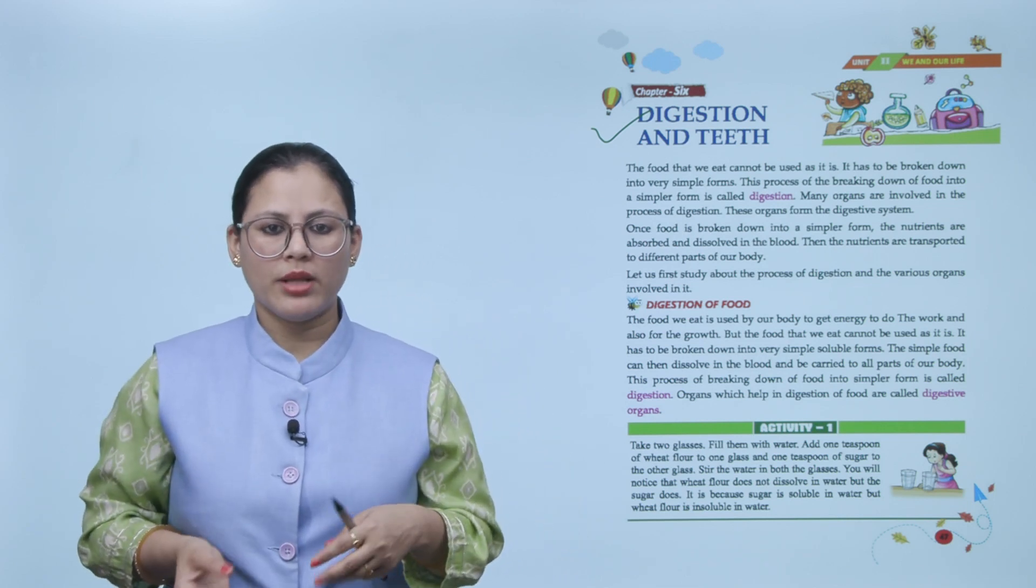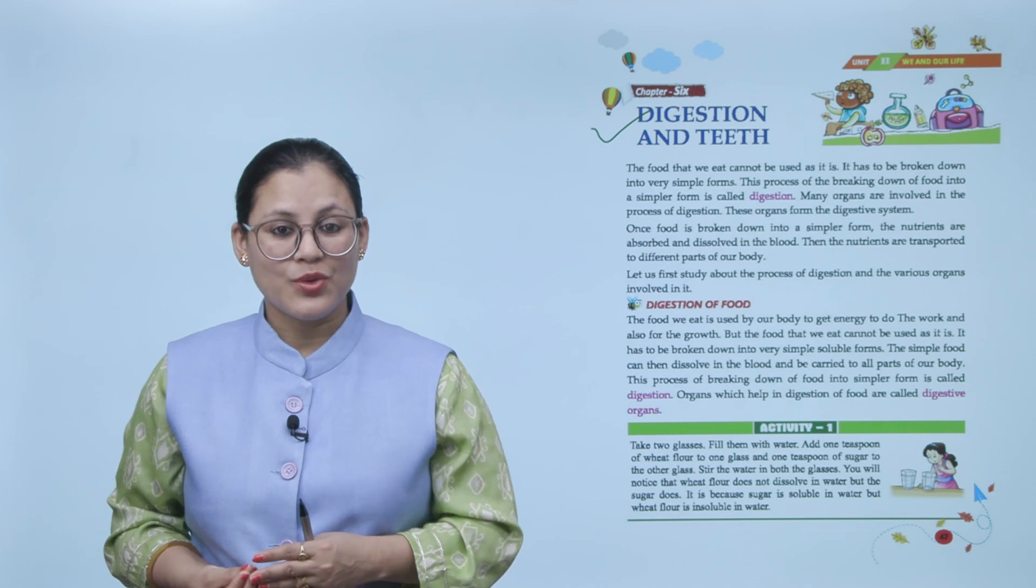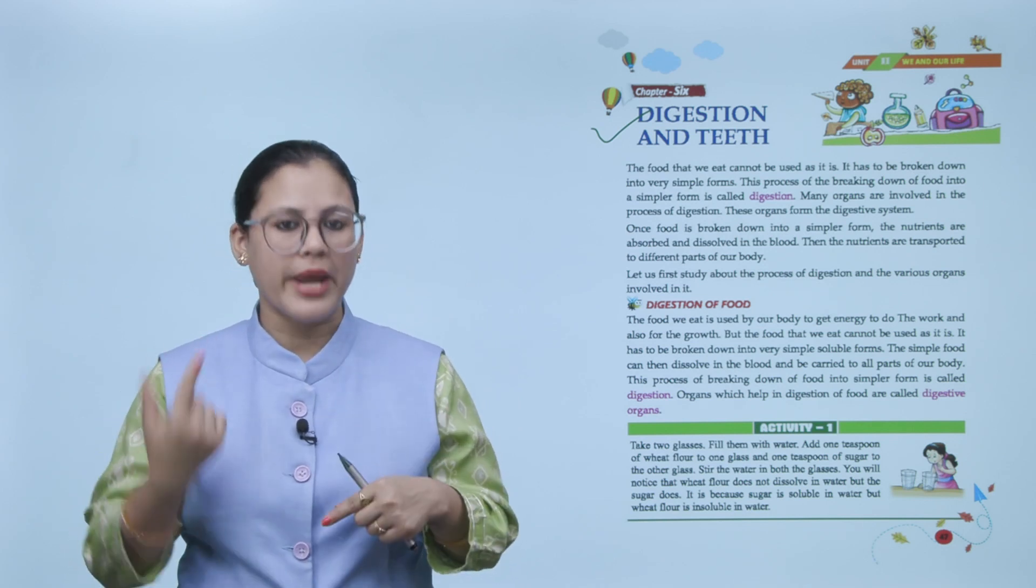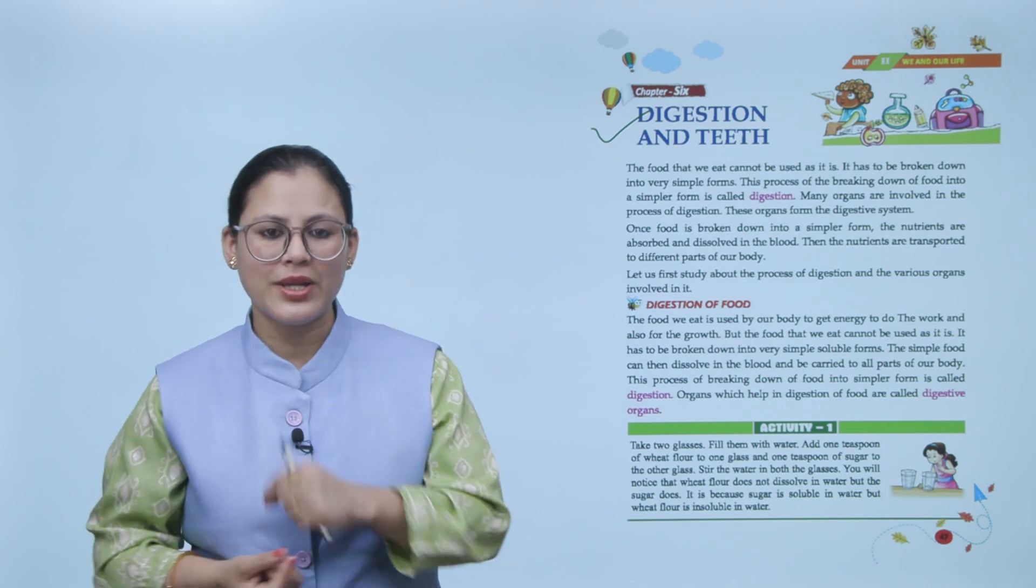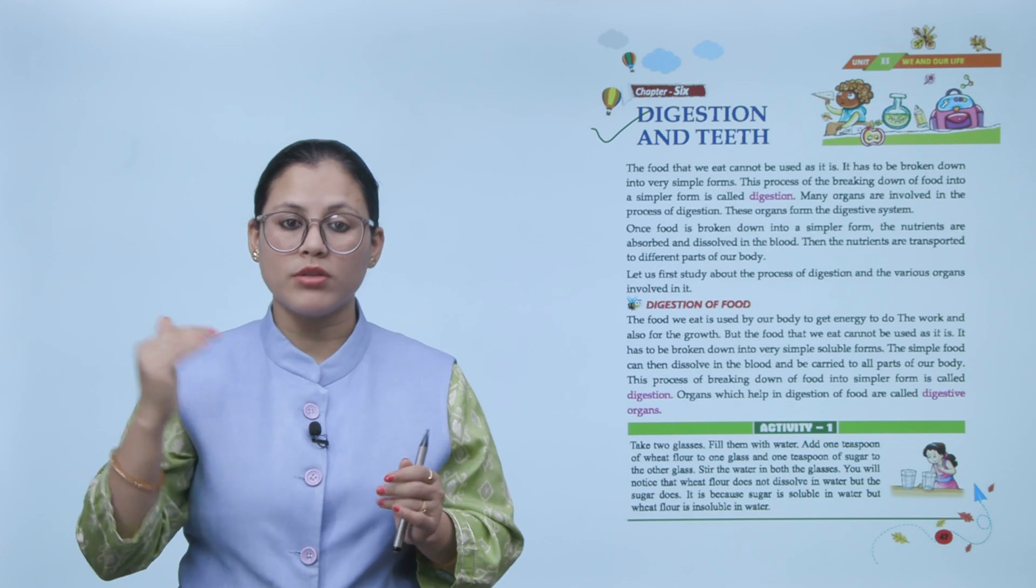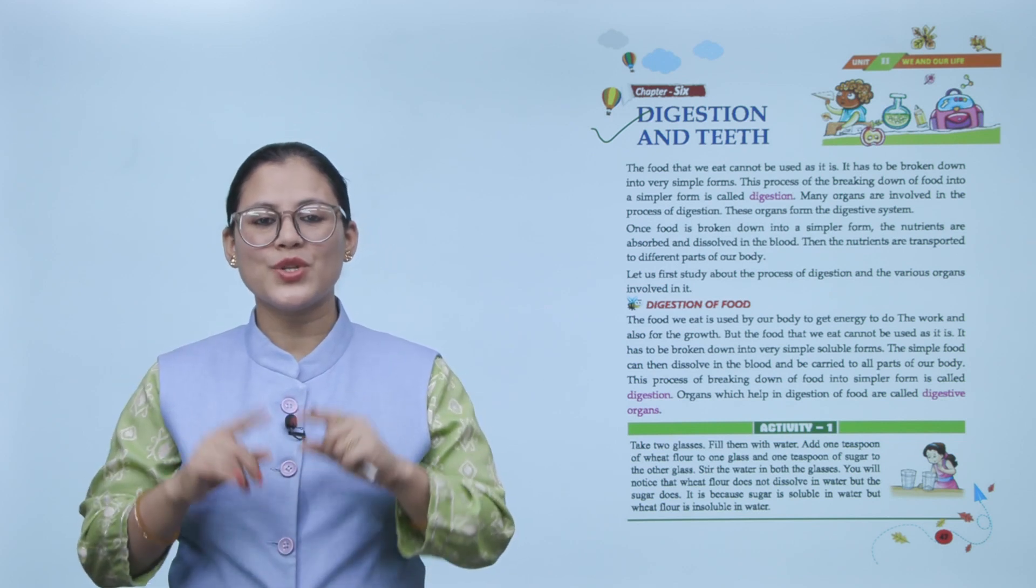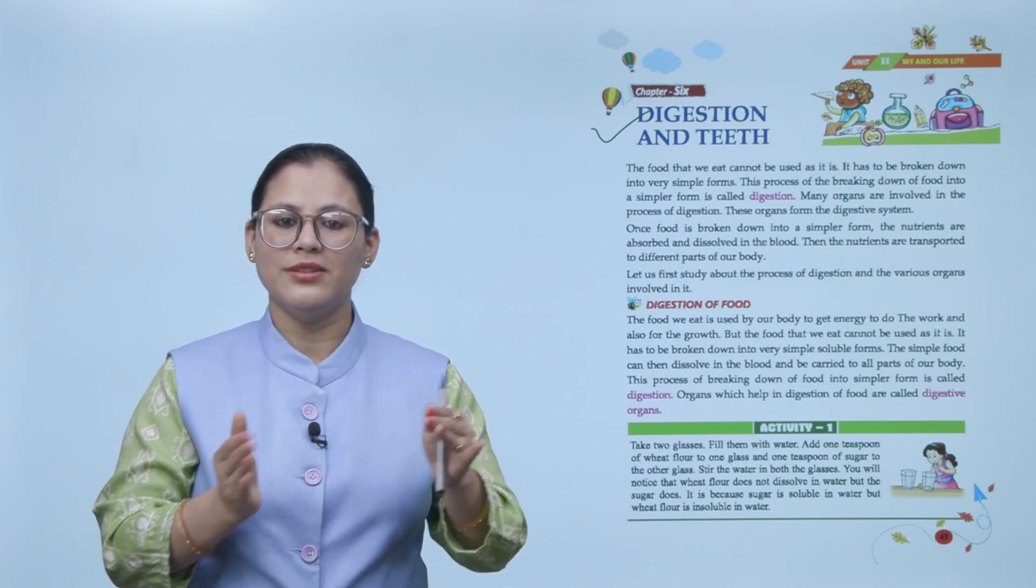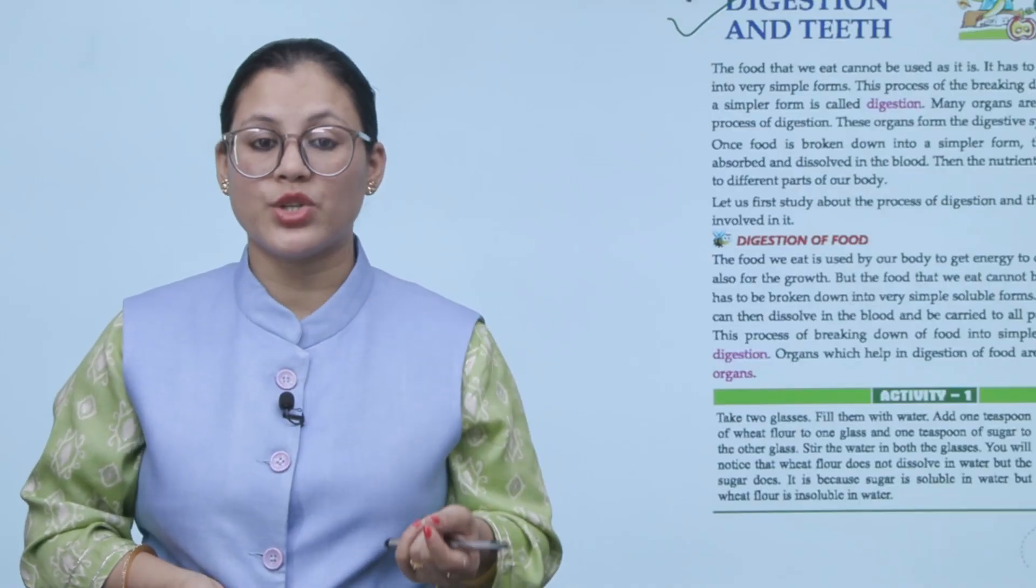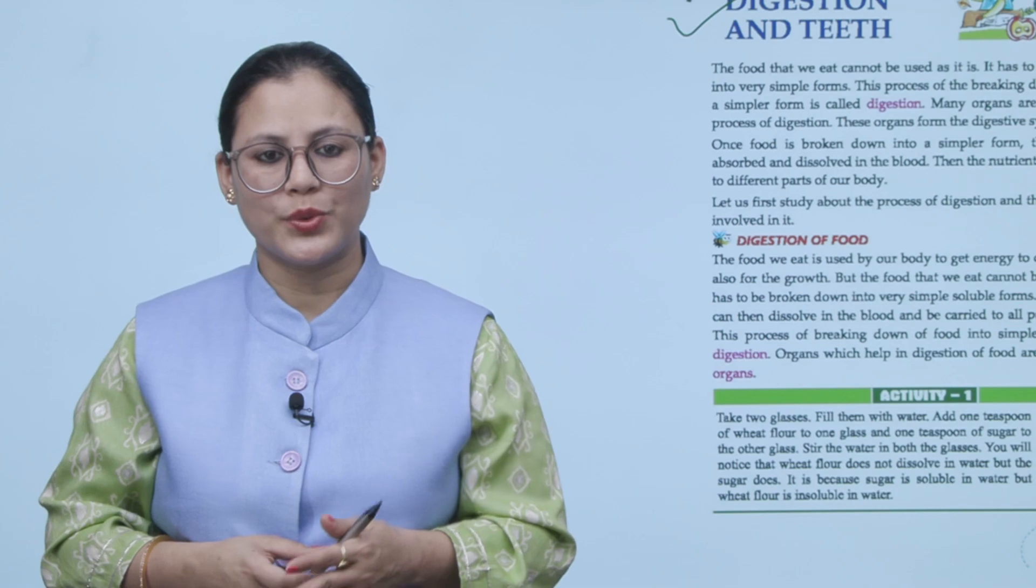What we eat, our body doesn't use as it is. It breaks in simple form. The process of digestion is called for your breakdown. It is known as digestion. So when digestion happens, there are many organs involved in it. And these organs are made as a digestive system. So first we will understand what is the process of digestion and which organs are involved in it.